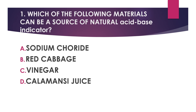Number one: Which of the following materials can be a source of natural acid-base indicator? A) Sodium chloride, B) Red cabbage, C) Vinegar, D) Calamansi juice.